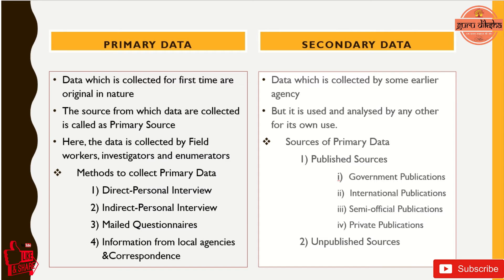We also have some precautions for using secondary data. The organization must check whether the data is reliable and suitable for the statistical survey. The investigation team should check whether the data is sufficient for the present investigation or not. These are the main two precautions for using secondary data by the government or international organizations.